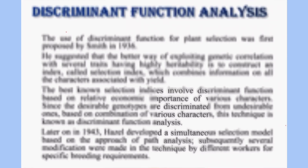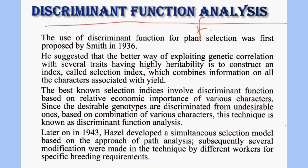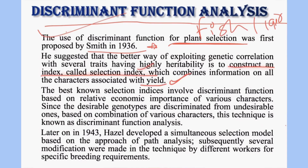Discriminant function analysis was first used by Fisher in 1936, and the use of such discriminant function for plant selection was first used by Smith in 1936. He suggested a better way of exploiting the genetic correlation with several characters that show high heritability. Such characters are used in the construction of an index called a selection index — a linear combination of characters associated with yield.